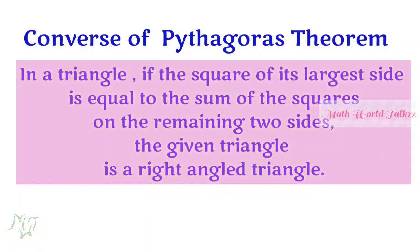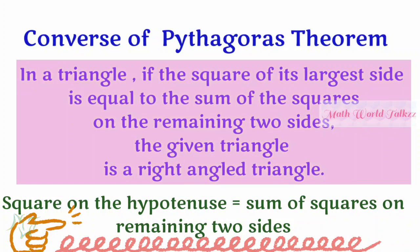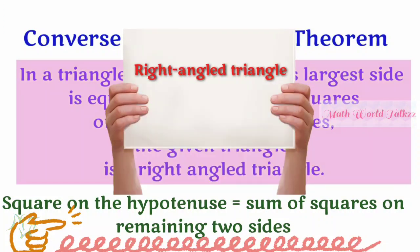Now, the converse of Pythagoras' theorem: in a triangle, if the square of its largest side is equal to the sum of the squares of the remaining two sides, then the given triangle is a right angle triangle. So if three sides are given, square the largest side and compare it to the sum of the squares of the other two sides. If they are equal, the triangle is a right angle triangle.